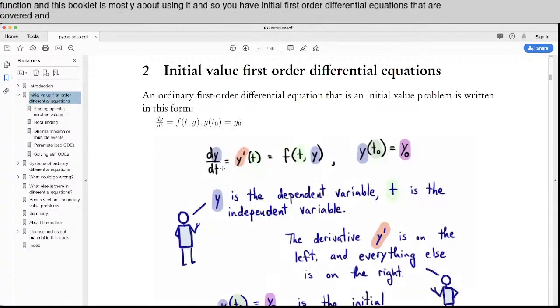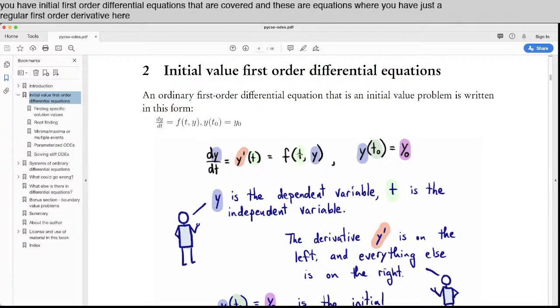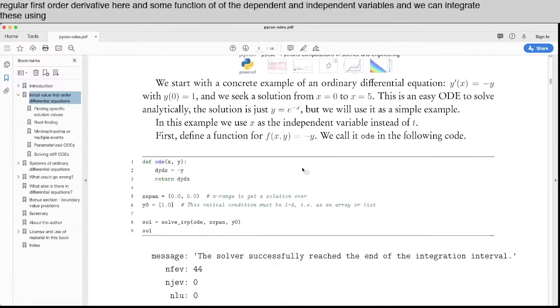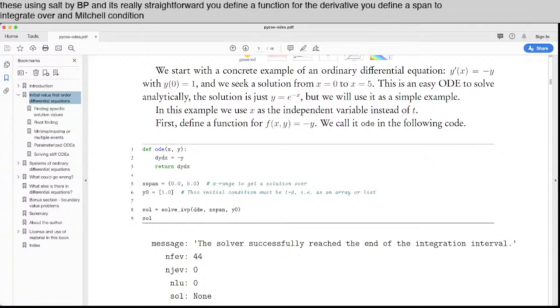And these are equations where you have just a regular first order derivative here and some function of the dependent and independent variables. And we can integrate these using solve_IVP. And it's really straightforward. You define a function for the derivative. You define a span to integrate over initial condition. And then you get a solution.